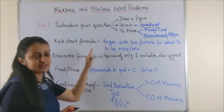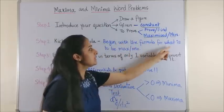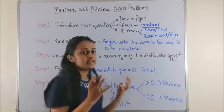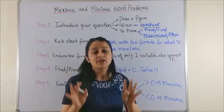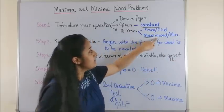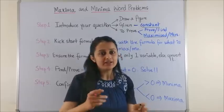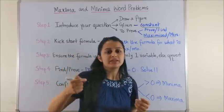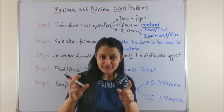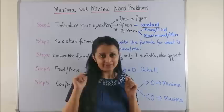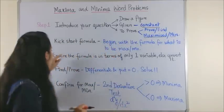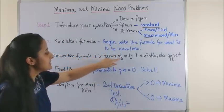Moving on to Step 2, the kickstart formula. By this we mean begin with the formula for what is to be maximized or minimized. If you have maximized or minimized quantity clearly laid out in Step 1, then this becomes almost mechanical. You just pick up the formula for that specific thing and start writing.